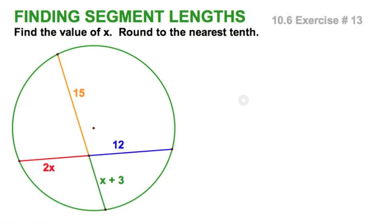Now this chord-chord exercise, number 13, in our textbook also has two segments which have the variable x in them. So let's see what we get here. We set it up, same thing, red times blue, orange times green too.